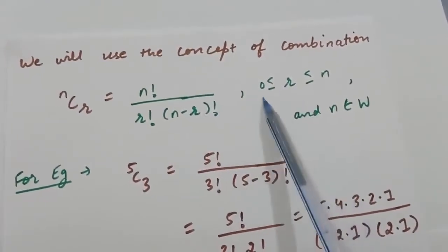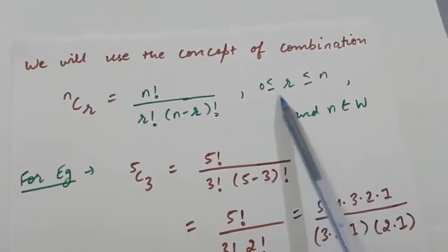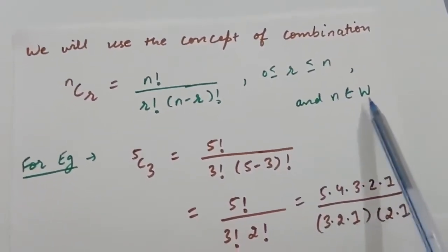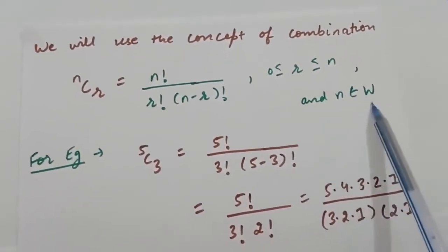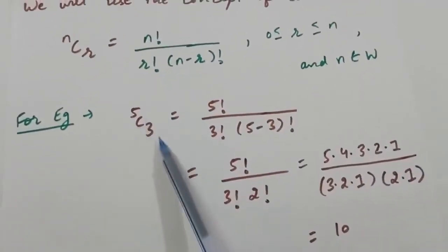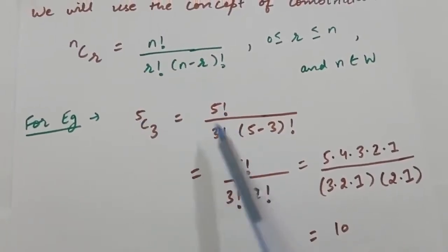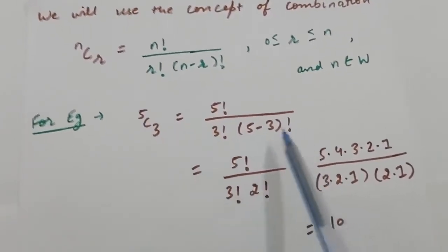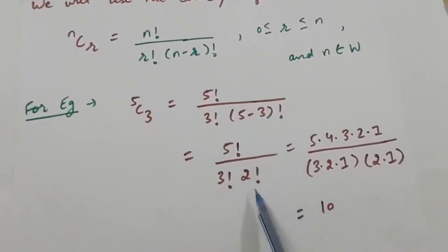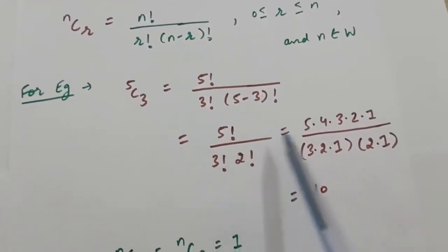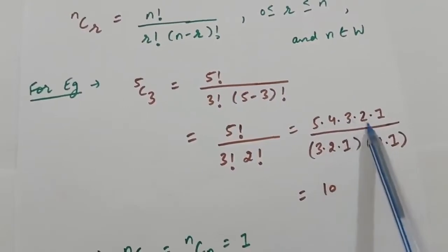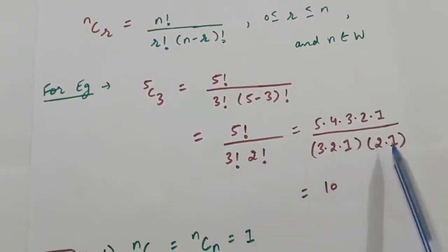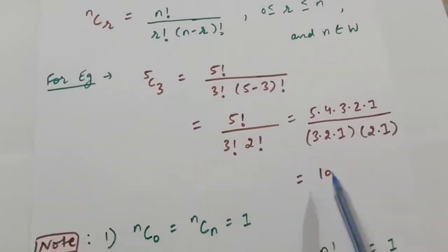The range of r is from 0 to n — r takes values 0, 1, 2, up to n — and n belongs to whole numbers. For example, to calculate 5C3: it will be 5! / (3! × (5−3)!) = 5! / (3! × 2!). Writing it out as (5×4×3×2×1) / (3×2×1 × 2×1), you get the answer 10.